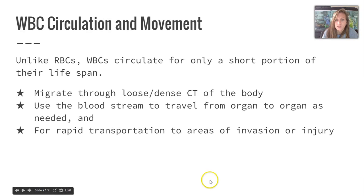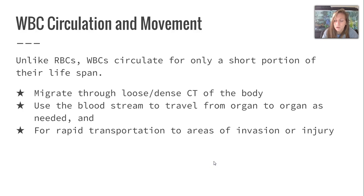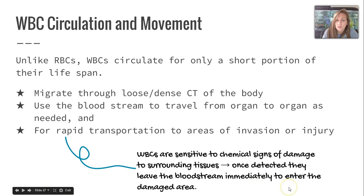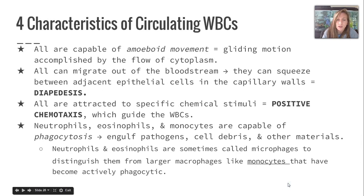White blood cell circulation and movement: unlike RBCs, white blood cells circulate for only a short portion of their lifespan. They migrate through loose and dense connective tissue of the body and use the bloodstream to travel from organ to organ as needed, as well as for rapid transportation to areas of invasion or injury. White blood cells are very sensitive to any chemical sign of damage to surrounding tissue, and once detected, they leave the bloodstream immediately to enter that damaged area.